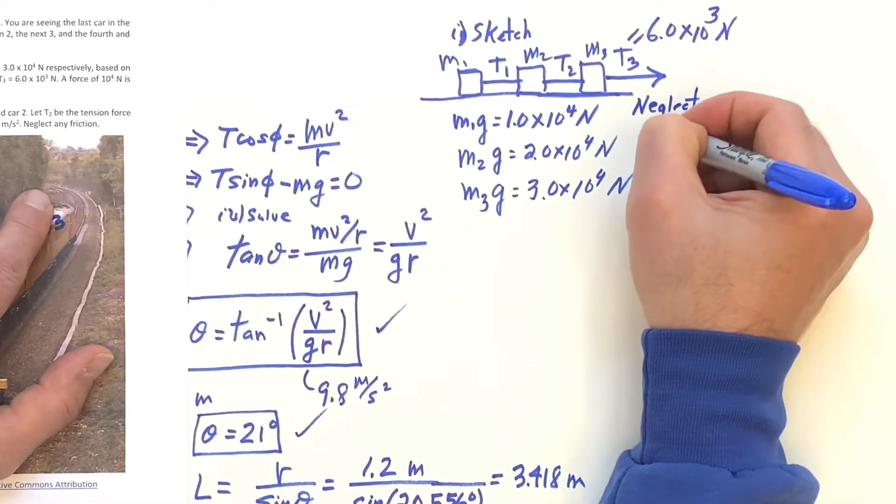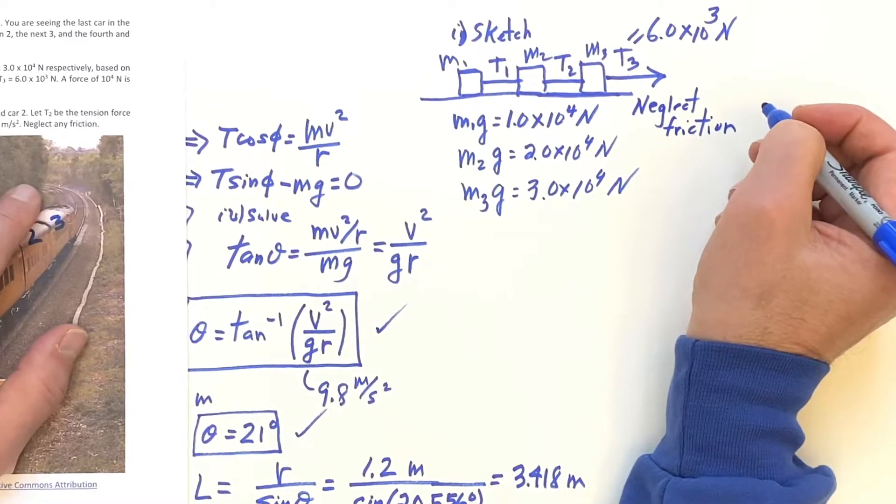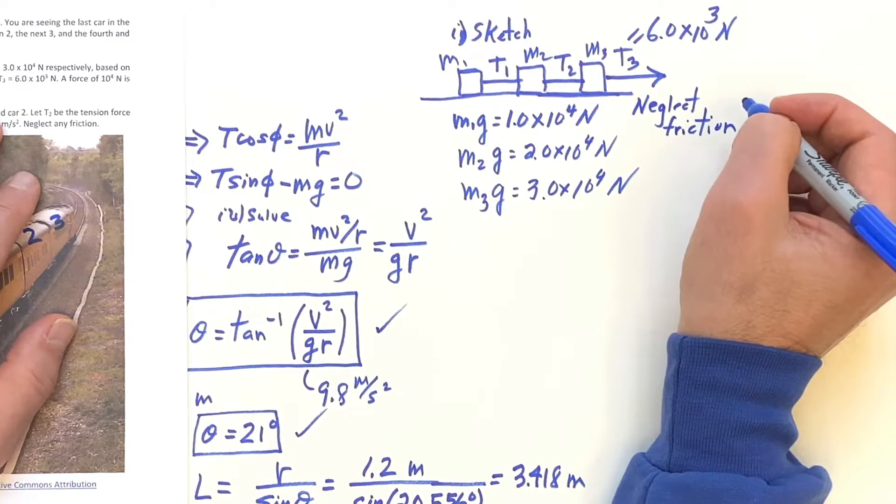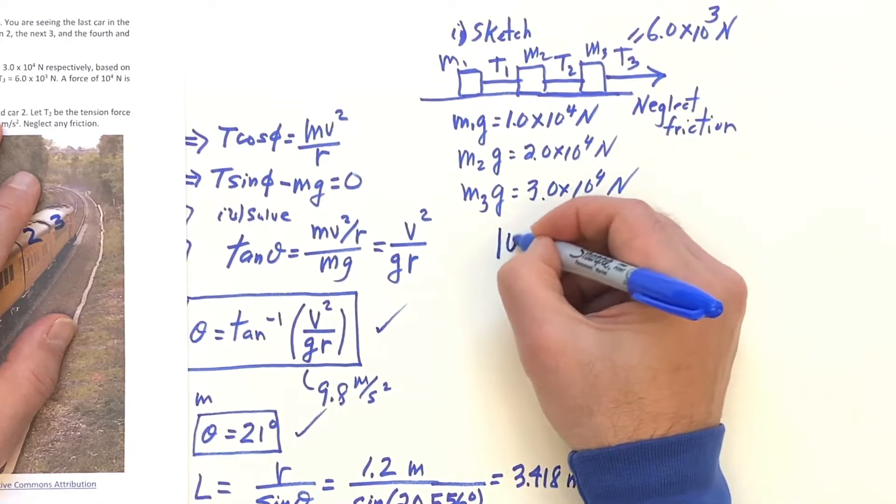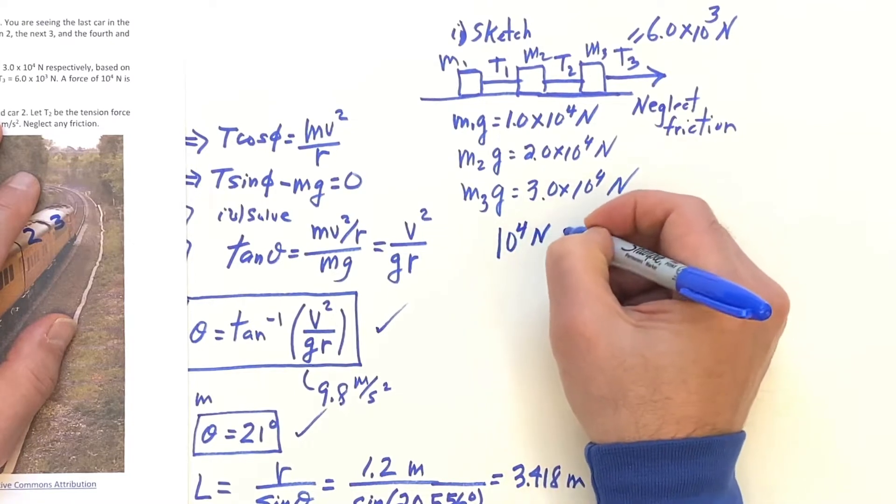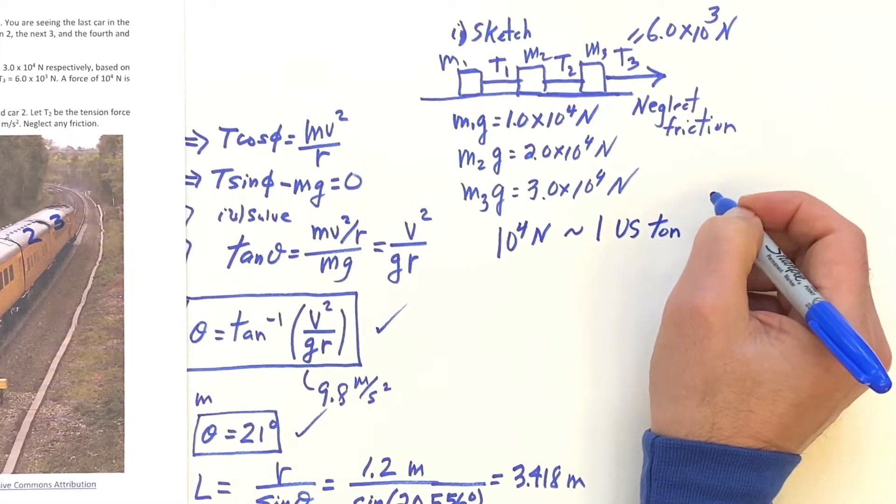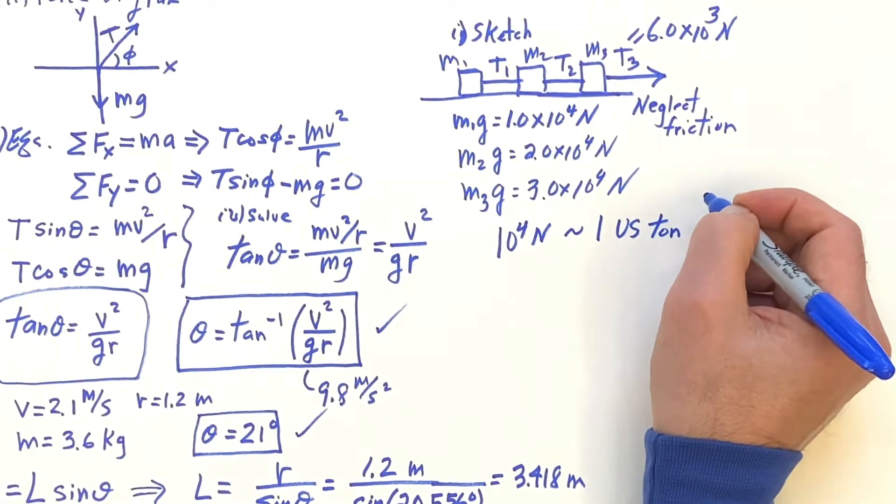Alright, and we are going to neglect friction. We study friction in the next class, so we'll get friction in there in problems. And for those in the U.S., you can consider 10 to the fourth Newtons to being close to one U.S. ton.